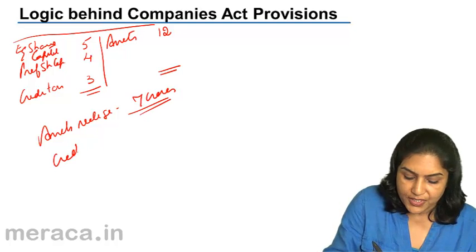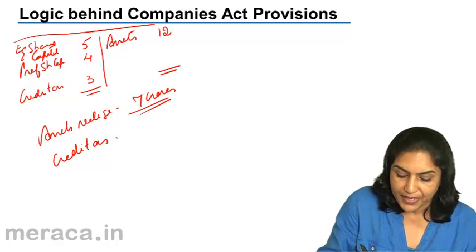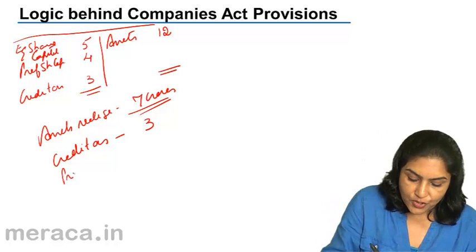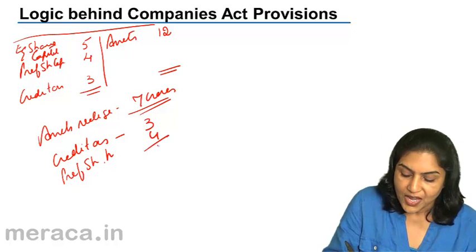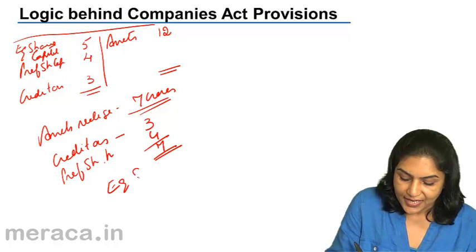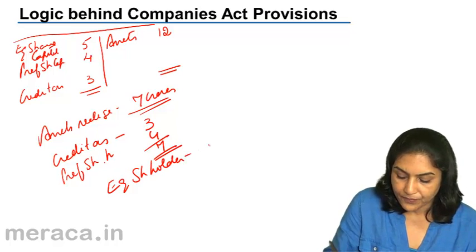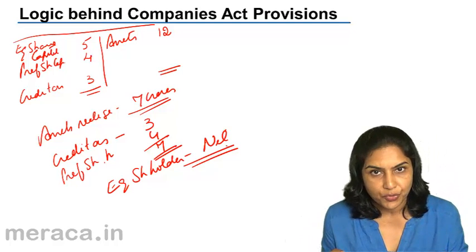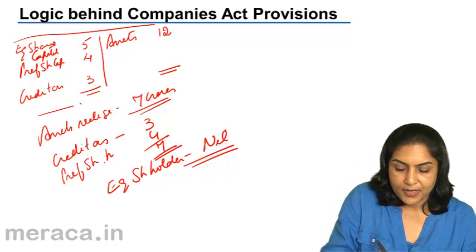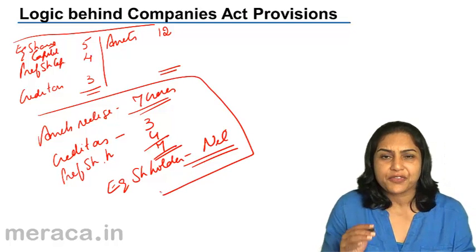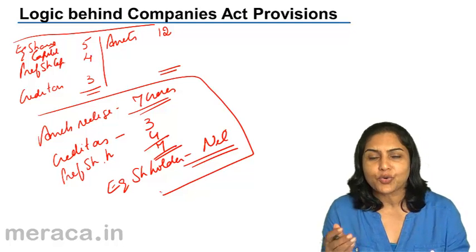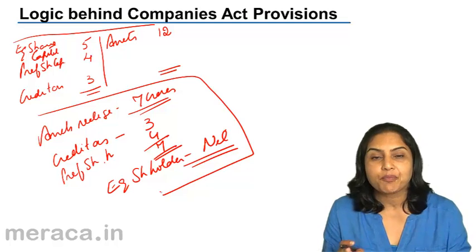In a liquidation, outside creditors must be paid first. They would receive 3 crores, leaving a balance of 4 crores which would go to the preference shareholders. Equity shareholders get nothing and suffer a loss of the 5 crores they contributed. This is the scenario if the company is liquidated and assets of 12 crores realize only 7 crores — a simple example to understand the logic behind the Companies Act provisions.